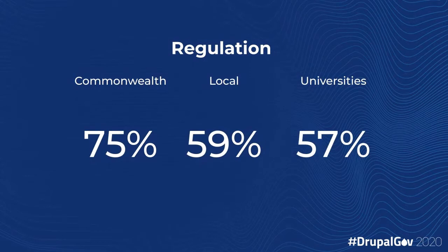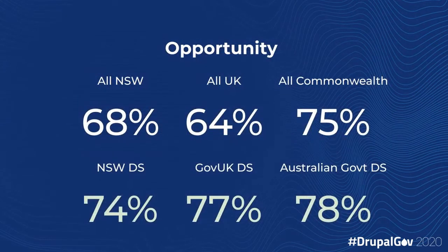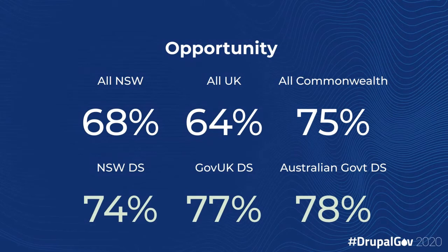The regulation — a unified stack from top to bottom certainly has beneficial impacts for the overall scores, as well as reducing the variability. Local governments and universities are reinventing the wheel, falling into the same old problems with each site build and not getting any of those gains from iterating on a better system. Design systems represent an opportunity. The GovUK design system shows a huge jump — 64 to 77. It's a similar story for the New South Wales design system. Certainly the design system is a determining factor there.